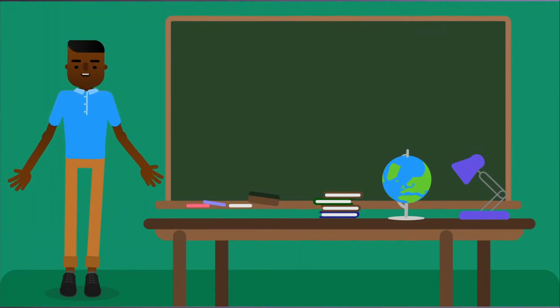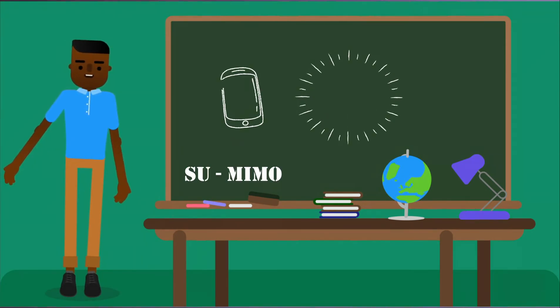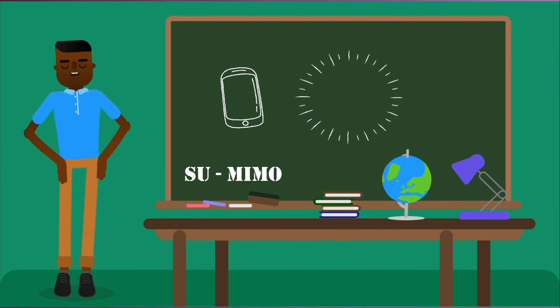MU-MIMO also has beamforming. In short, it sends a signal to a specific device. Unlike SU-MIMO that just sends it all around you. So for an example, SU-MIMO, imagine a little dot and then a circle just keeps expanding around that little dot.